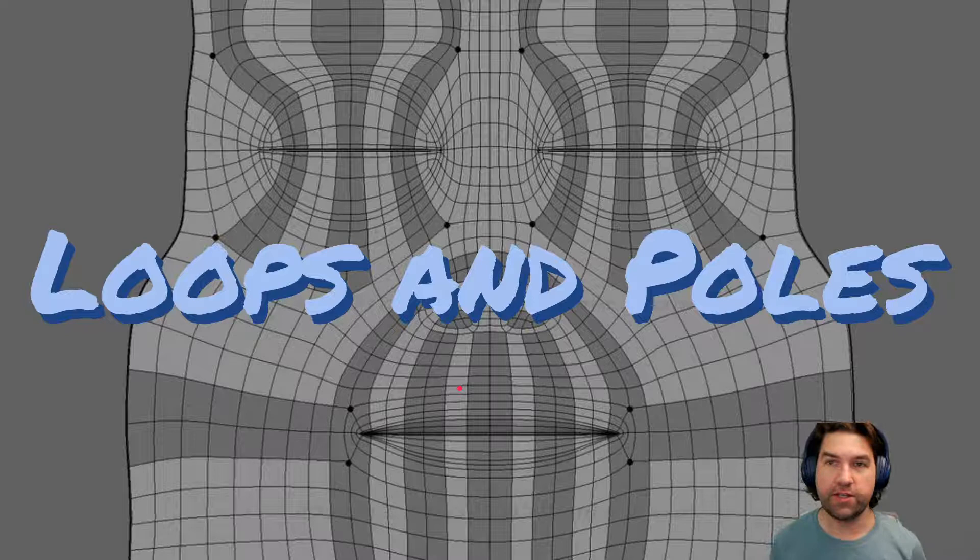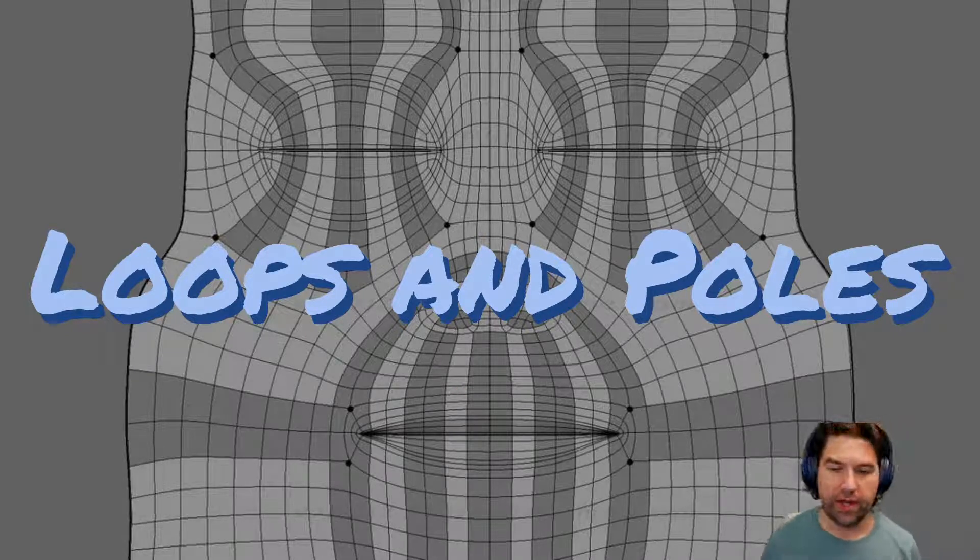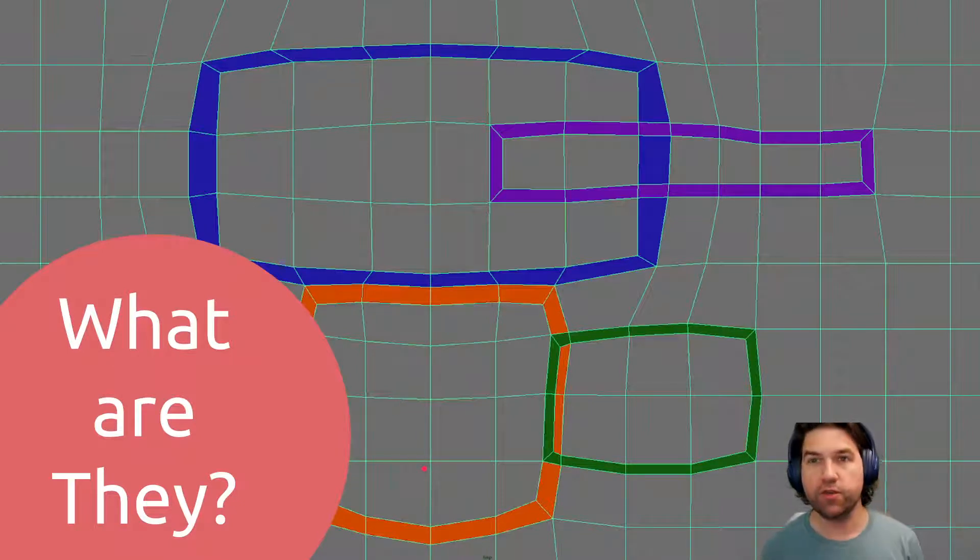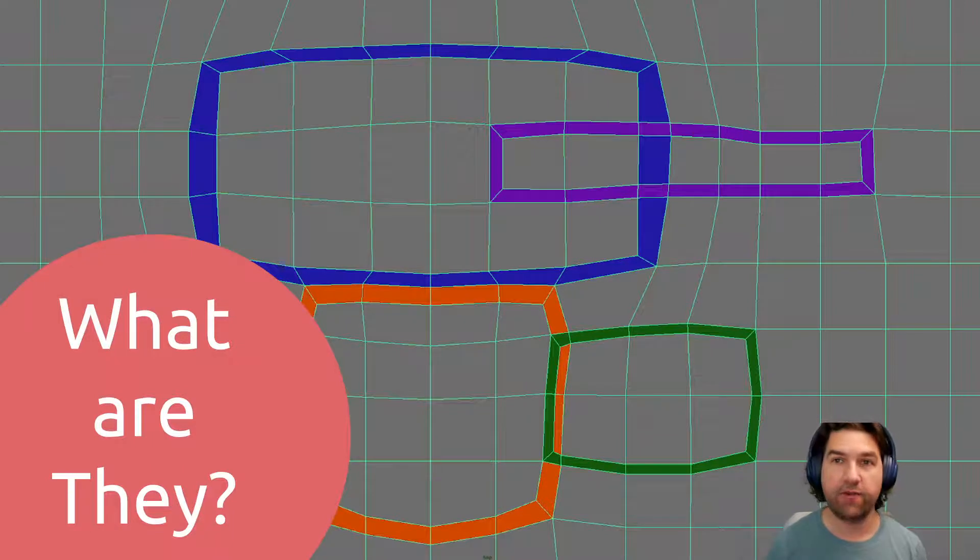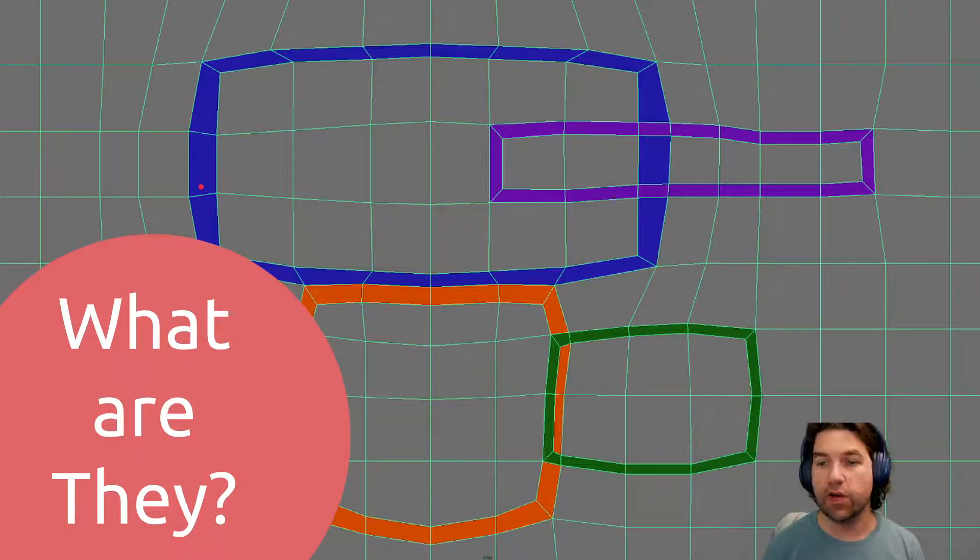This is where we get to these terms that I've been using: loops and then poles. A loop can be made up of faces and a loop can be made up of edges. But the way to understand it is a loop is any grouping or selection that always passes through two other faces, or a line or an edge that always passes through two other edges.